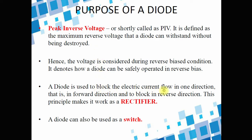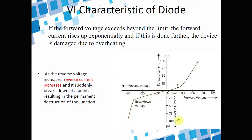A diode is used to allow electric flow in one direction (forward direction) and block it in the reverse direction. This principle makes it work as a rectifier. A rectifier is an important circuit wherein alternating current is converted into direct current, and that is what is used in a transformer, in a power supply — a rectifier. A diode can also be used as a switch.